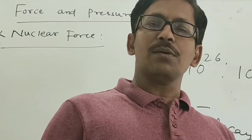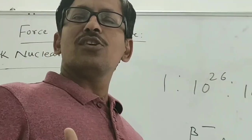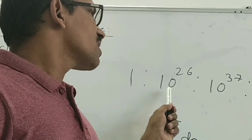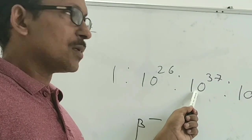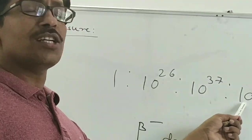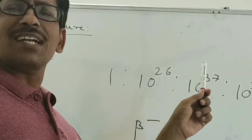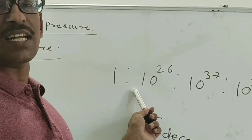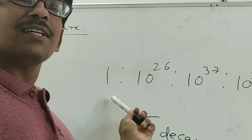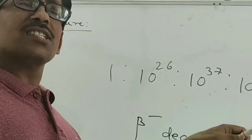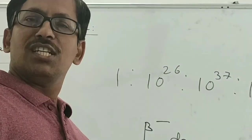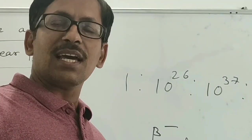These are the different types of forces we have discussed. Comparing the strength of these four forces: the strong nuclear force is 10³⁷ times stronger than the gravitational force; the electromagnetic force is also about 10³⁷ times stronger than gravitational force; the weak nuclear force is 10³⁶ times stronger than gravitational force. That means the gravitational force is the weakest force in nature.